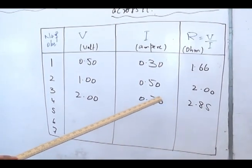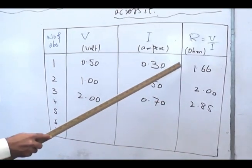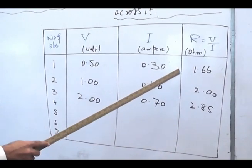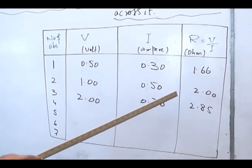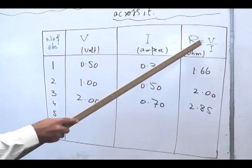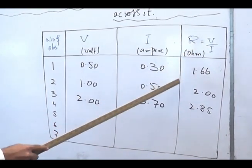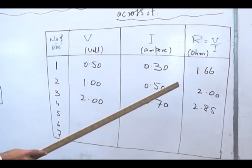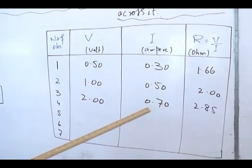Since here the resistance does not remain constant because temperature does not remain constant, that's why here the ratio of V over I is not constant. That means here tungsten filament does not obey the Ohm's law.